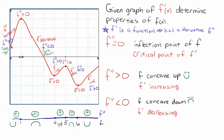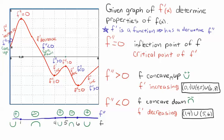f'' positive means concave up, negative means concave down, positive means concave up. So the intervals of concavity are: concave up from 0 to 1, 4 to 5, and 6 to 8; concave down from 1 to 4 and 5 to 6. To summarize: f is concave up where f'' is greater than 0, meaning where f' is increasing — on (0,1), (4,5), and (6,8). f is concave down where f'' is less than 0, meaning where f' is decreasing — on (1,4) and (5,6).